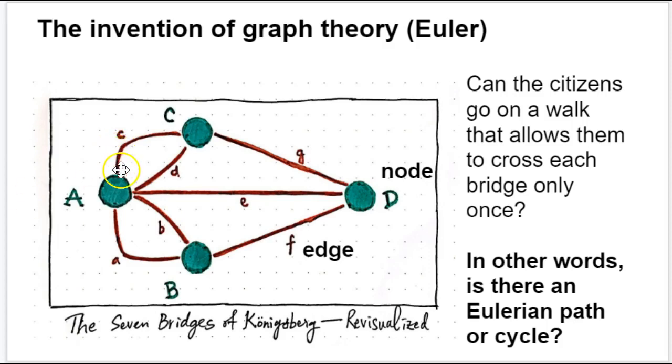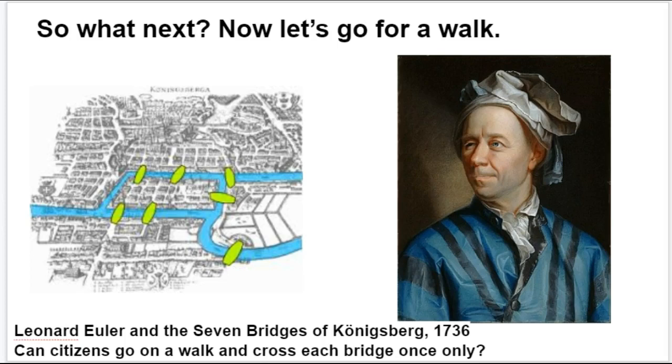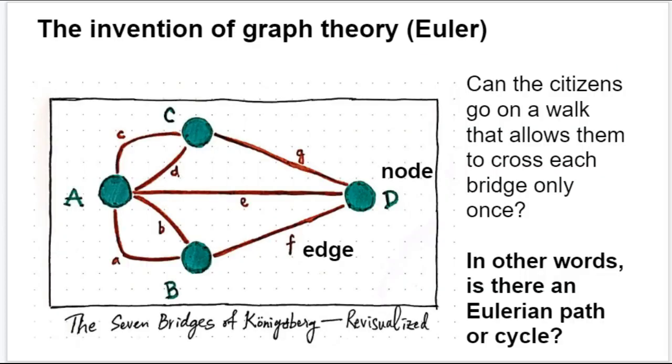Everywhere we see one of these red lines that have the lowercase letters, those are the bridges. You'll notice that there are seven of them, and Euler started this, they're called edges.